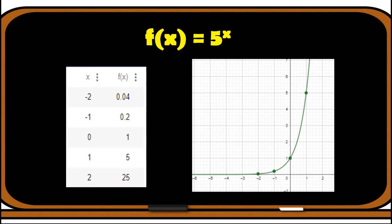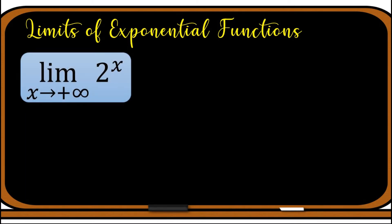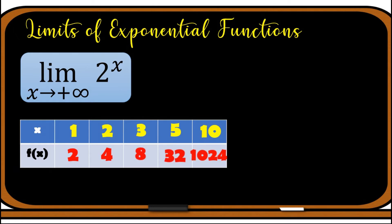At this point, let us now find the limits of exponential functions. We begin with an exponential function whose base is greater than one. Let us find the limit of 2^x as x approaches positive infinity. Using a table of values with positive values 1, 2, 3, 5, 10, we do direct substitution: 2^1 = 2, and continuing we get values 4, 8, 32, and 1024. The values of f(x) are increasing as x increases.